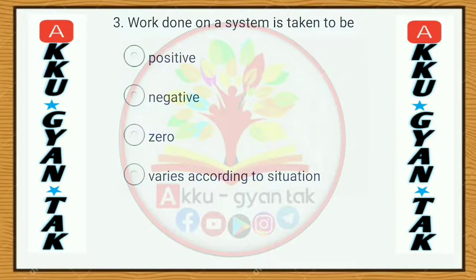Right. Work done on a system is taken to be: a) positive, b) negative, c) zero, d) varies according to situation.